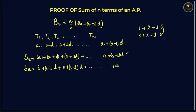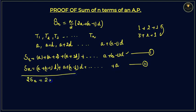We add a plus n minus 1 times d with a by taking the first equation and the second equation and adding them together. This gives 2 times Sn, where each pair of corresponding terms sums to 2a plus n minus 1 times d, and every subsequent term also equals 2a plus n minus 1 times d, all the way to the last term.